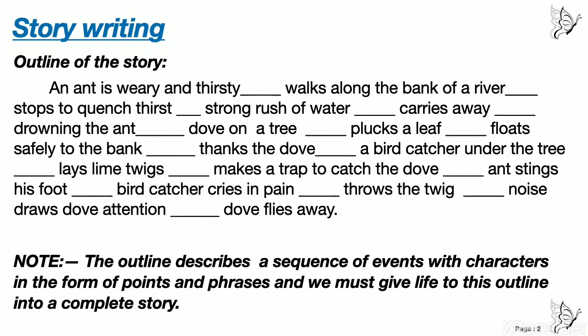In the outline, the first point is the ant is weary and thirsty — that means tired. The ant is weary and thirsty — this is one point. When he was feeling thirsty, he walks along the bank of the river — another point. Then he stopped to quench his thirst — another point. In this way, all these are just points and you have to write them in detail. You have to make this small outline into three to four paragraphs of a complete story.